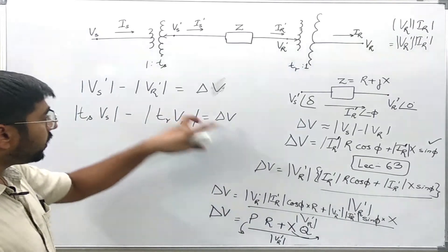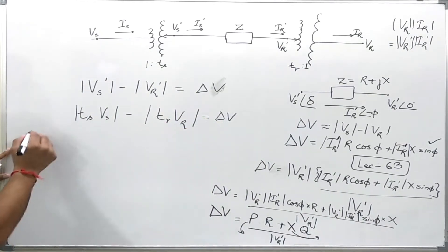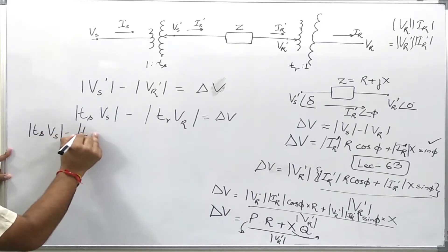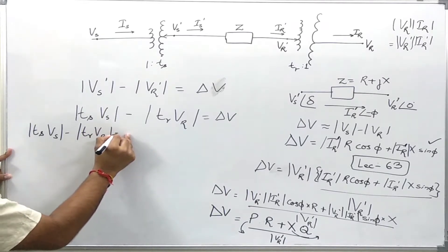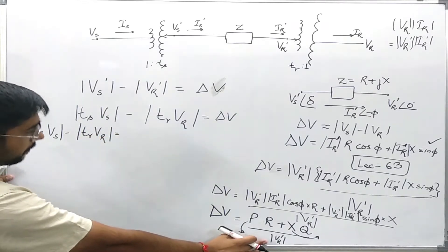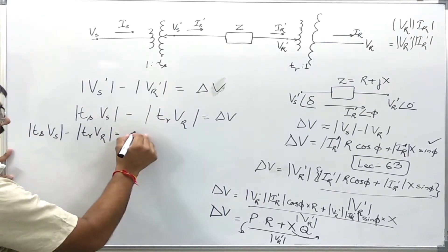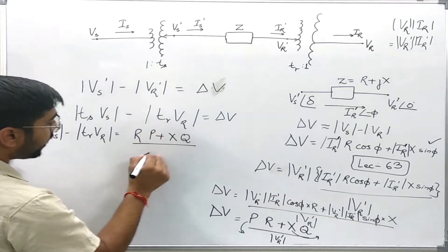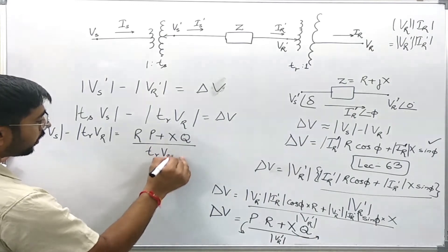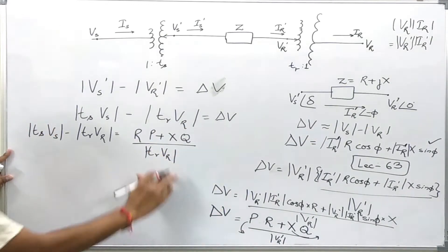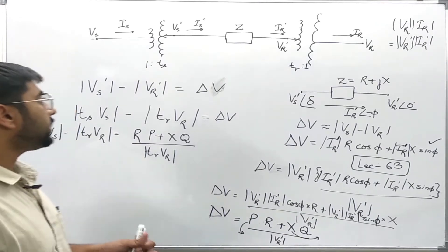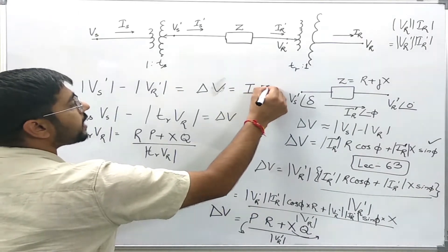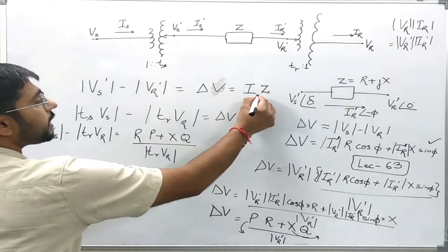Putting this into the equation, I have: Ts·Vs minus Tr·Vr equals (R·P + X·Q) divided by Vr prime. Now Vr prime can be replaced with Tr·Vr, giving: Ts·Vs minus Tr·Vr = (R·P + X·Q) divided by (Tr·Vr). Here I have replaced Vr prime with Tr·Vr. This delta V is equivalent to Ir prime times Z.